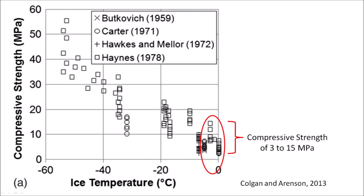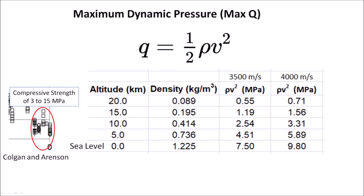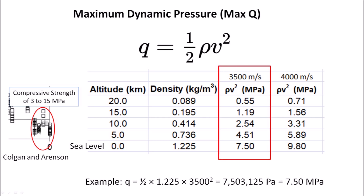The overlaps in the data points of the graph represent empirical values corroborated by several researchers. This graph is important because the compressive strength of ice is often underestimated. For launch speeds of 3.5 and 4.0 km per second, we can see that the aerodynamic forces are smaller than the compressive strength of the glacier ice, which has a high range of 15 MPa. This means that the ice boulders could have survived the reentry through the atmosphere without breaking up. For ice boulders traveling at 3.5 km per second, the aerodynamic pressure reached approximately 7.5 MPa at sea level.